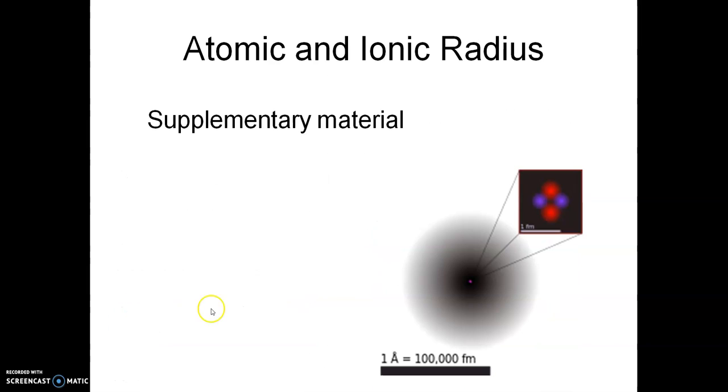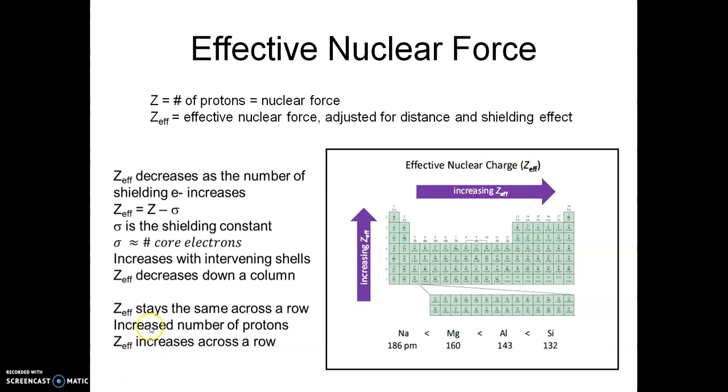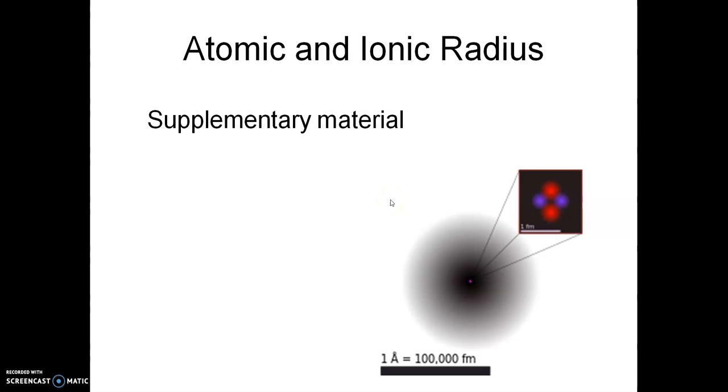So where it says Z effective stays the same across, Z effective actually increases across. I got to fix that. So Z effective increases going across, Z effective decreases going down. Those are the kind of trends we'll be looking at on the periodic table. What happens as you go across, what happens as you go down. So now with that, let's look at how it affects atomic radius.